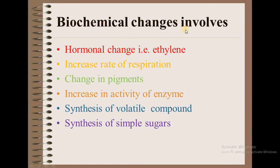Next are the biochemical changes involved in fruit ripening. The first one is hormonal changes, like the production of ethylene. The second is increased rate of respiration. The third is change in pigments. The fourth is increase in activity of enzymes. The fifth is synthesis of volatile compounds. The sixth is synthesis of simple sugars.